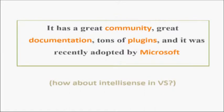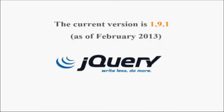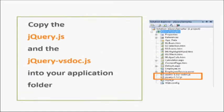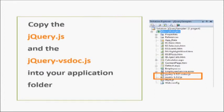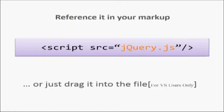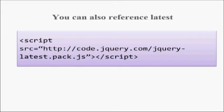jQuery has been recently adopted by Microsoft. So if you are a Visual Studio user, you can use jQuery.vsdoc.js to provide jQuery IntelliSense in your editor. Currently jQuery 1.9.1 version is in the market. If you want to use the jQuery API in your application, you just need to have jQuery.js in your file. If you are a .NET developer, you can also reference jQuery.vsdoc.js. You just need to reference this jQuery.js file in your DOM. Also, if you want the latest jQuery version, you can use the jQuery URL that jQuery.com provides.